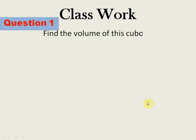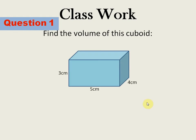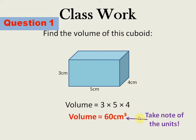Question number one: find the volume of the cuboid with dimensions 3, 5, and 4. Multiplying all three values gives a volume of 60 cm³. Note that 2D figures use centimetre squared (cm²) because two values are multiplied, whereas 3D figures use centimetre cubed (cm³) because three values are multiplied. The unit for volume is always in cubes — cm³, m³, ft³, or km³.